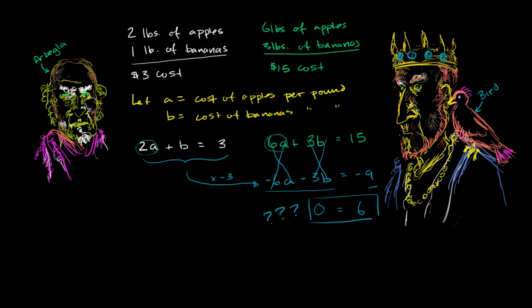And then you say, what's going on? And you look at the bird, because the bird seems to be the most knowledgeable person in the room, or at least the most knowledgeable vertebrate in the room. And so the bird whispers into the king's ear, and the king says, well, he says that there's no solution, and you should at least try to graph it to see why. And so you say, well, the bird seems to know what he's talking about, so let me attempt to graph these two equations and see what's going on.